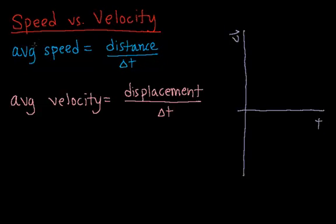So since speed incorporates a scalar over a scalar, then speed itself is a scalar. Since velocity incorporates a vector over a scalar, then velocity inherently has a direction and is therefore a vector.